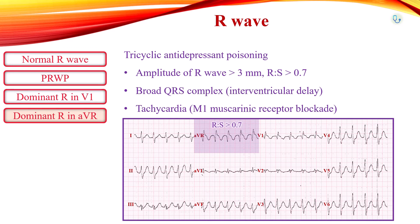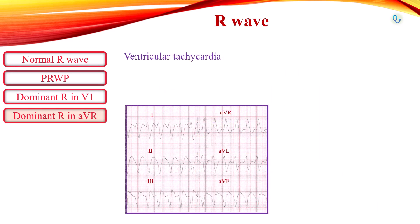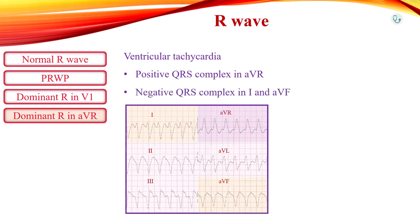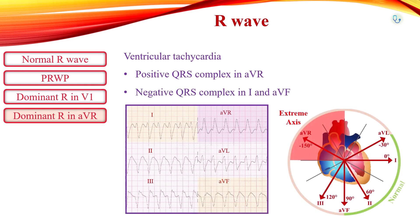In ventricular tachycardia, broad complex tachycardia with a positive QRS complex in AVR, negative in leads I and AVF, and extreme axis deviation can be observed.